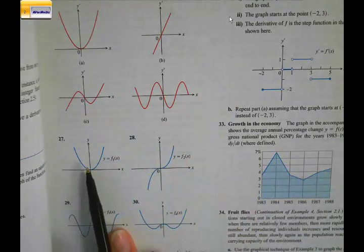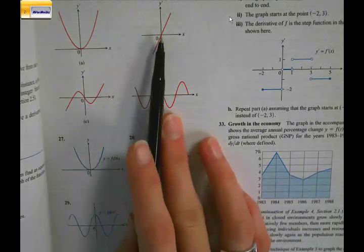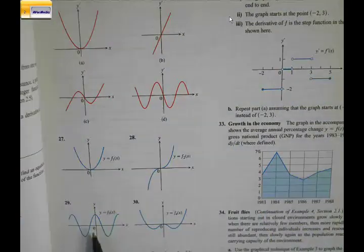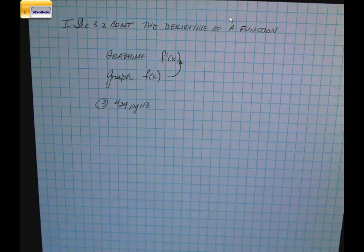We finished doing the parabola, and the first derivative of that was a linear graph. Now I'm going to do number 29 and take you through the process to determine which of those graphs above matches it as its first derivative.